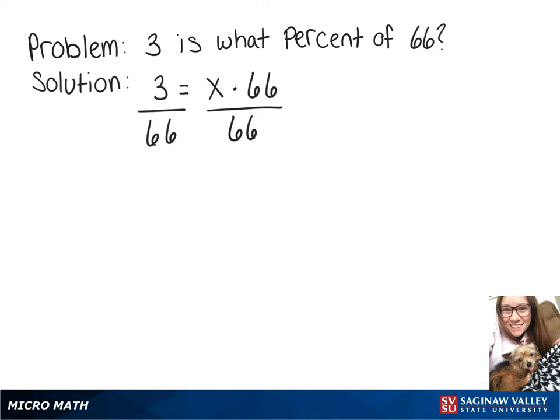This gives us an x value of approximately 0.045. Then to get our percentage we have to multiply that by 100, which gives us 4.5%.